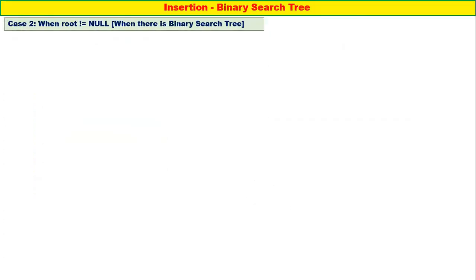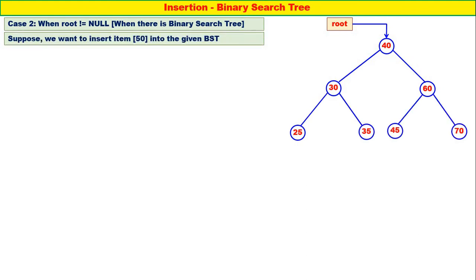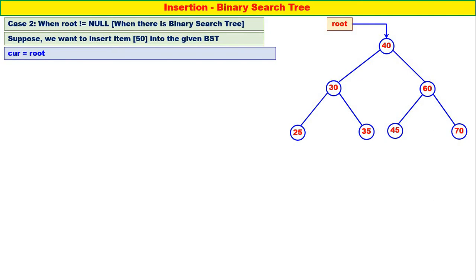Case 2: when root is not equal to null, meaning when there is already a binary search tree. This is our binary search tree. Suppose we want to insert item 50 into the given binary search tree. So we have to insert 50 — let us understand the logic. Kerr is equal to root; first start with kerr equal to root. Kerr is containing the address of the root.